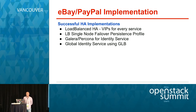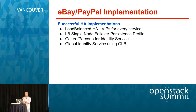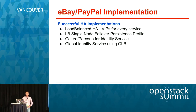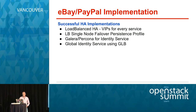The most successful HA implementations we have use load-balanced VIPs for every service — that works very well. We also use single-node failover persistence for MySQL VIPs and RabbitMQ VIPs, which tends to work well. We are also switching to Percona with Galera for identity service as a global identity service, and it seems to be working very well so far.